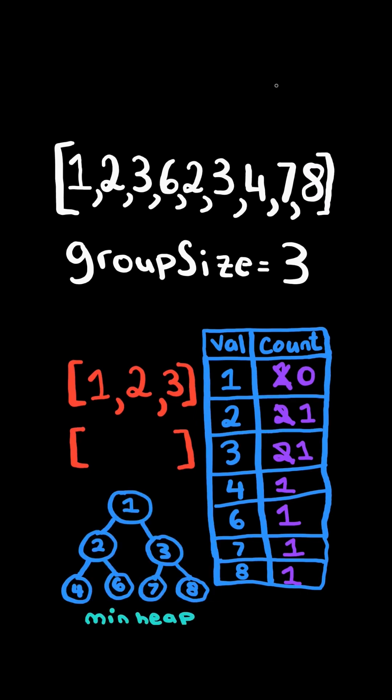What we can do is initially create a min heap with all the numbers. When the count of the minimum goes to zero, we pop it from the min heap. We can find the next minimum for the second group in log n time.